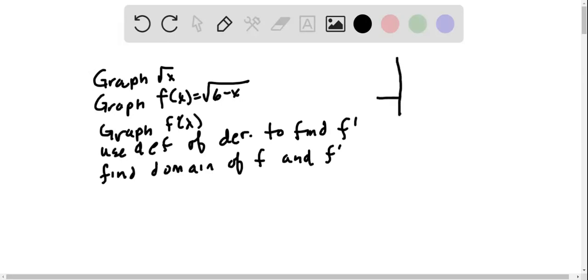Okay, first we want a graph of the square root of x. So the square root of x goes through zero zero. When x is one, y is one. When x is four, y is two, so it looks like this.